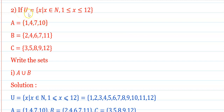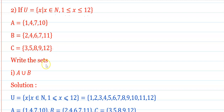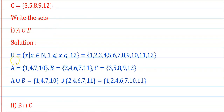Question 2: If U = {x : x belongs to natural numbers and 1 ≤ x ≤ 12}, A = {1, 4, 7, 10}, B = {2, 4, 6, 7, 11}, C = {3, 5, 8, 9, 12}. Write the sets. First: A union B.